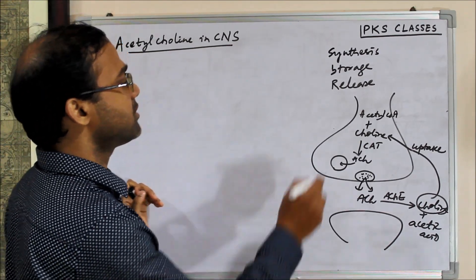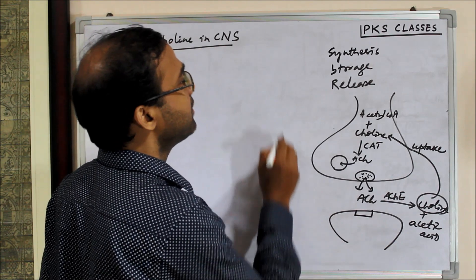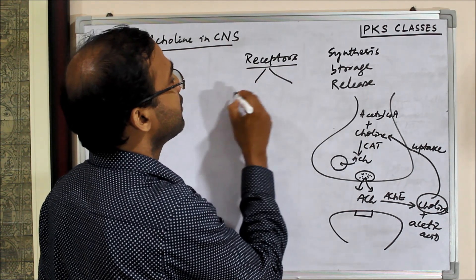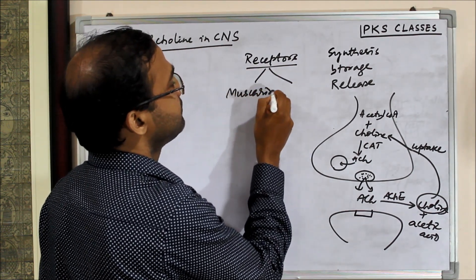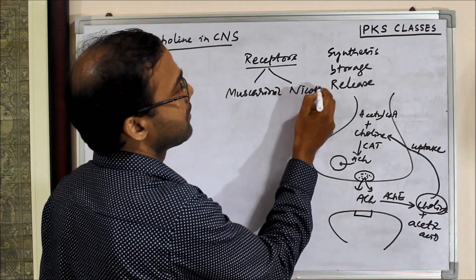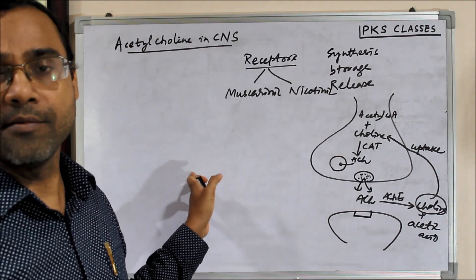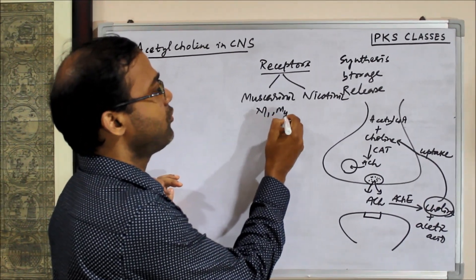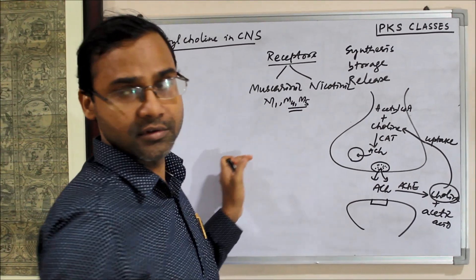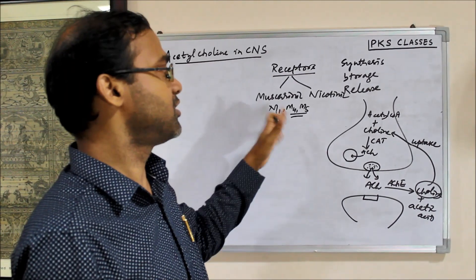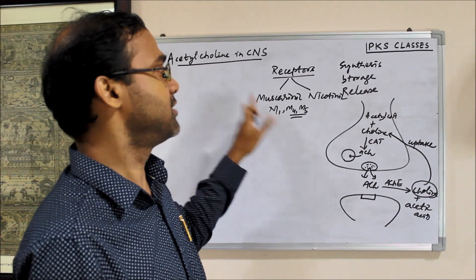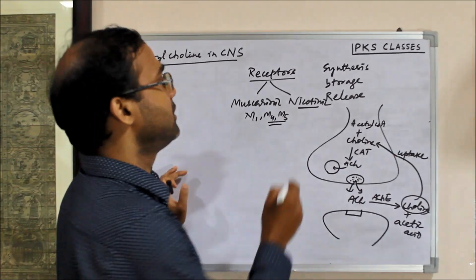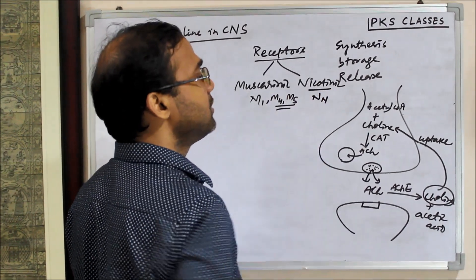The receptors of acetylcholine can be muscarinic or nicotinic. Muscarinic receptors are of five types: M1, M2, M3, M4, and M5. In the CNS we have M1, M4, and M5, though we don't know much about them yet, so mainly M1 is represented in the CNS. For nicotinic receptors, we have two types: nicotinic neuronal and nicotinic muscular, and in the CNS we have nicotinic neuronal.